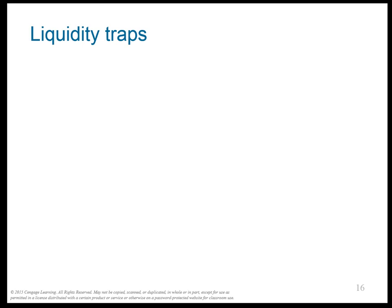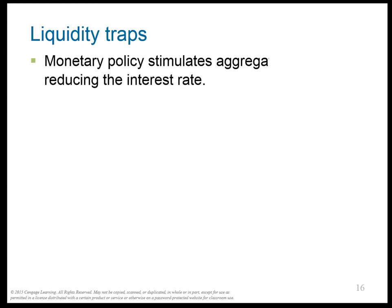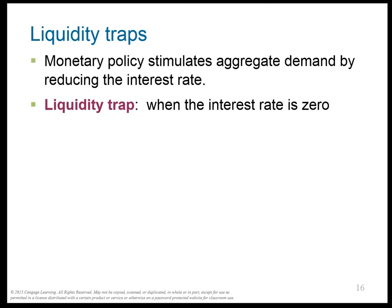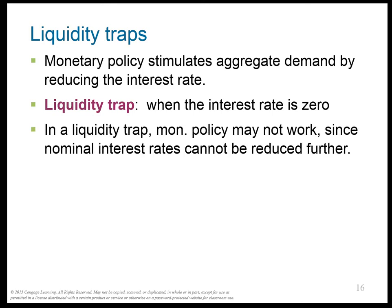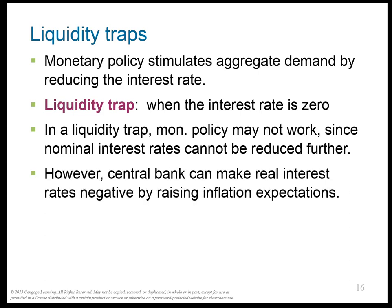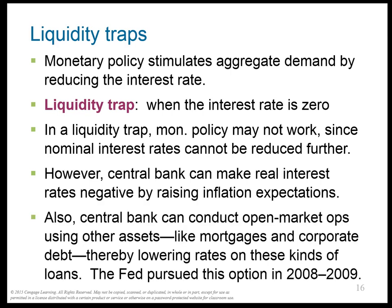The Fed can only push so much money into the economy before the interest rate hits zero. Once the interest rate hits zero, the Fed can't reduce interest rates any further — this is known as a liquidity trap. Monetary policy cannot work. Even worse, if the Fed keeps pumping money into the economy, it can make real interest rates negative by raising inflation expectations. What the central bank can do — as we did in 2008-2009 — is instead of buying and selling bonds on the open market, they can start buying up other assets. In 2008-2009 they bought up mortgages and corporate debt, since they were already at the zero lower bound for bonds.